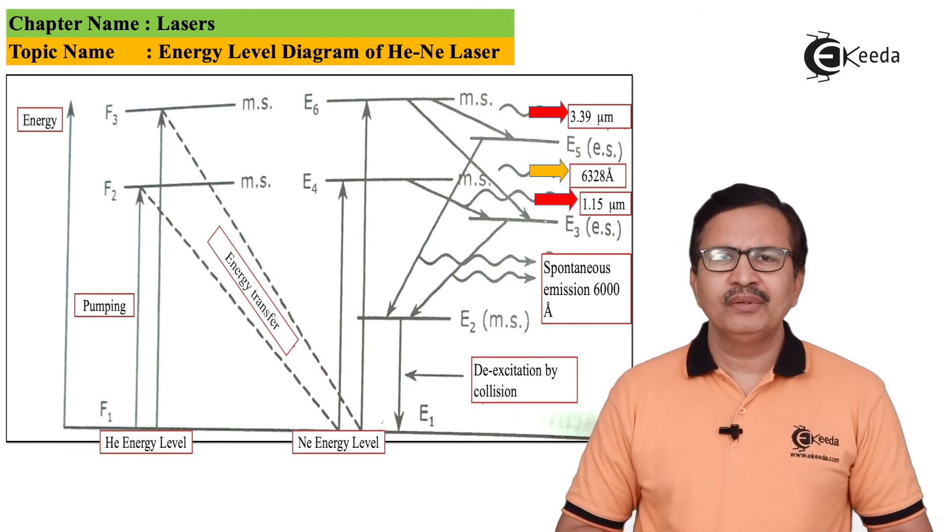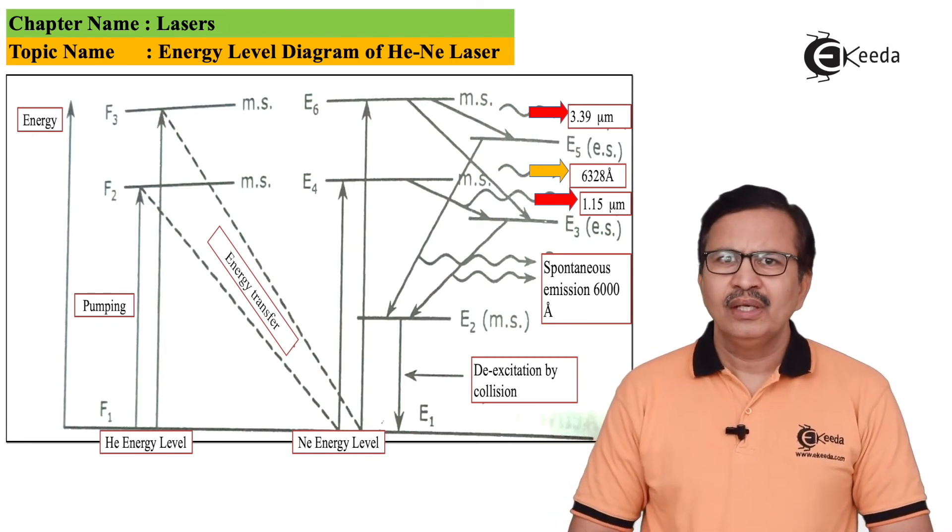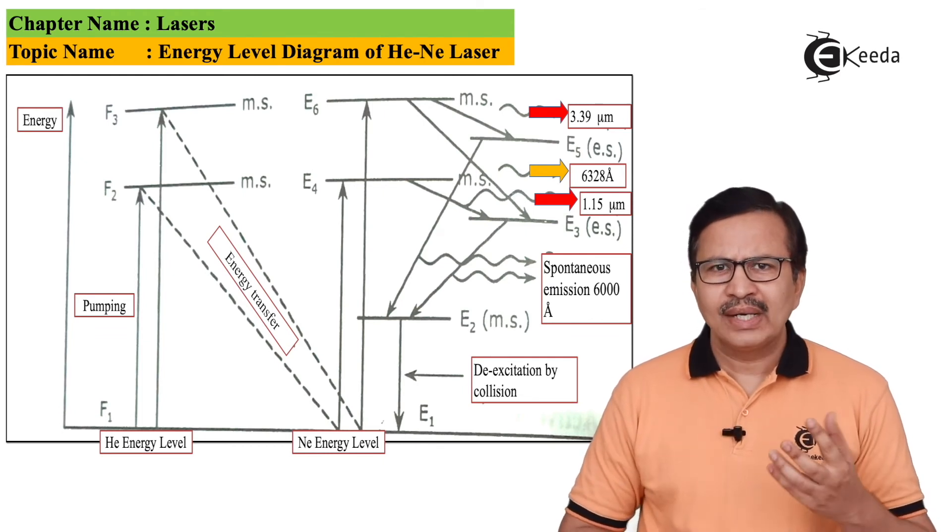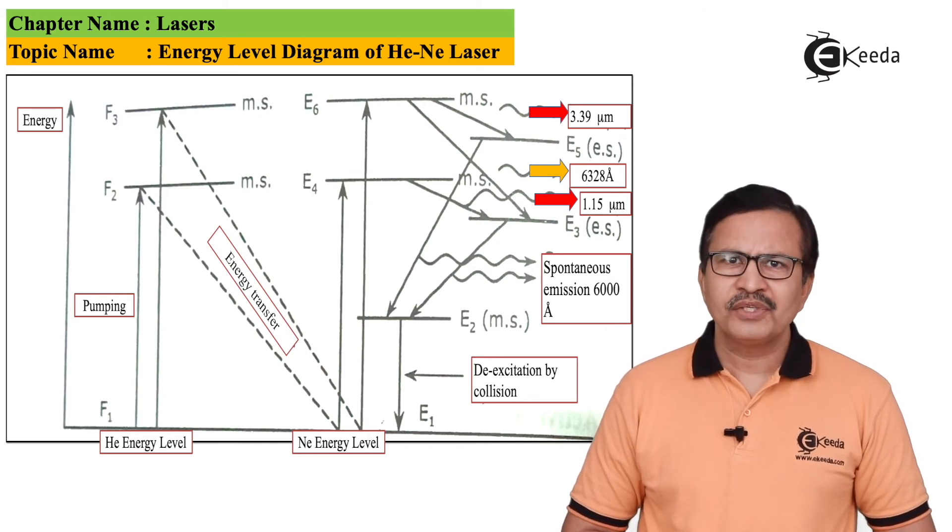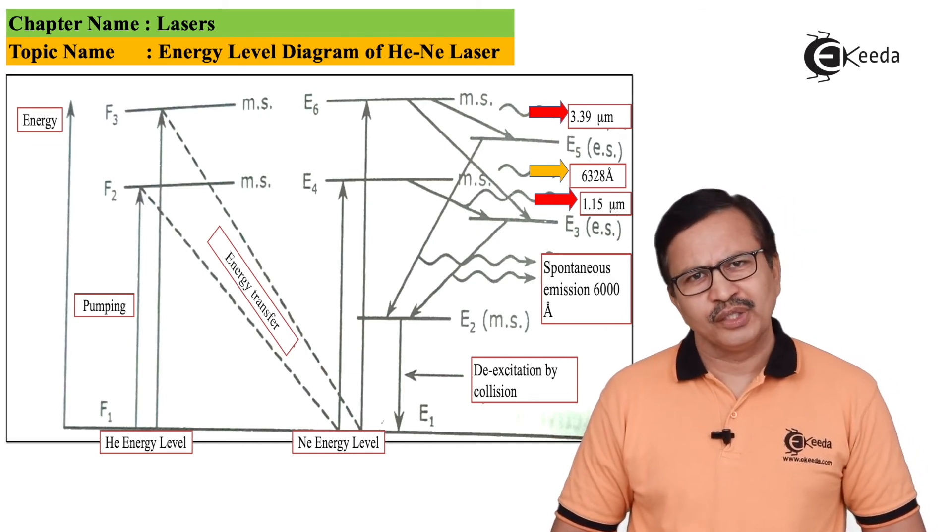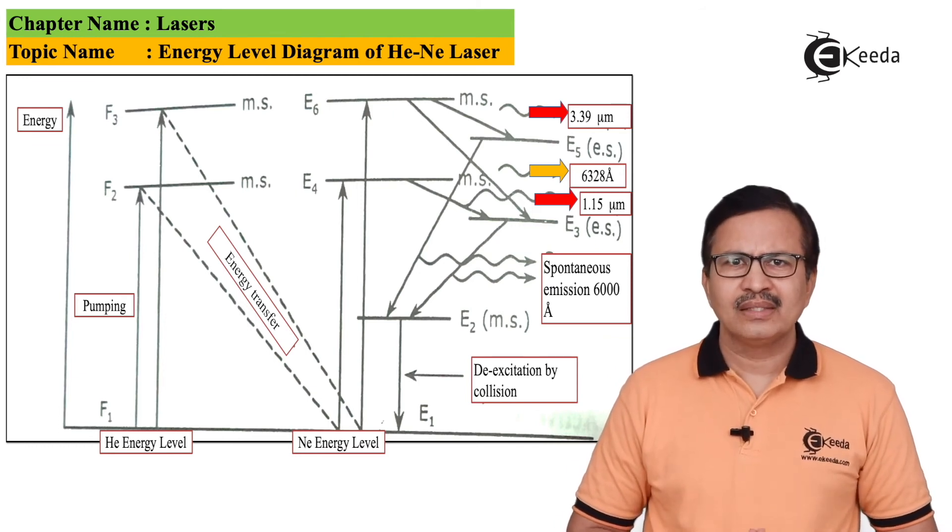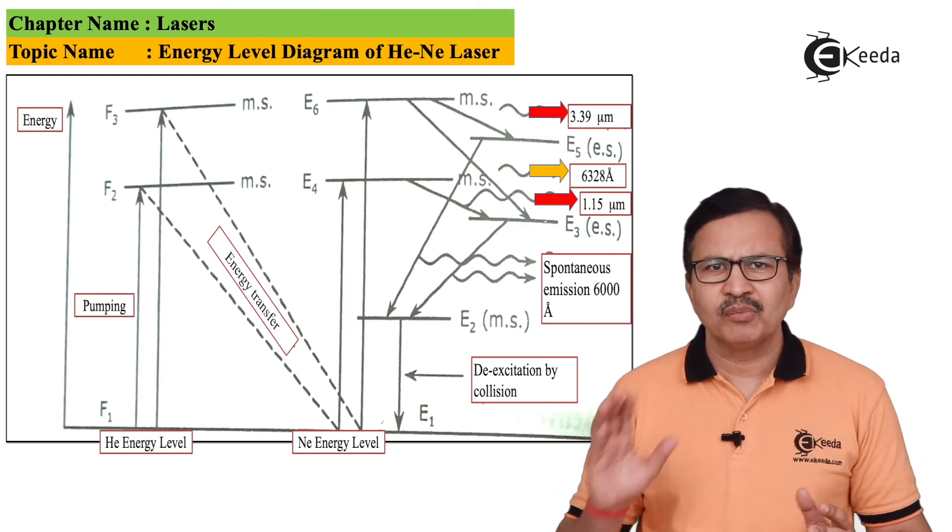By the time these neon atoms are coming to the ground state, a new pack of neon atoms has already made a transition to E4 and E6, which are the metastable states of neon. Due to this, the helium neon laser operates in continuous mode.